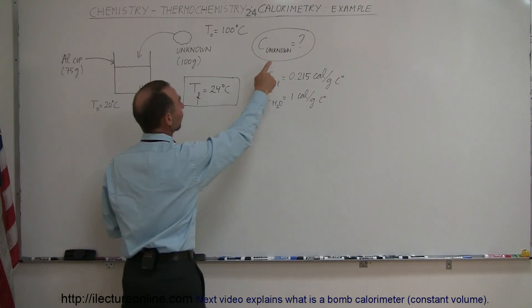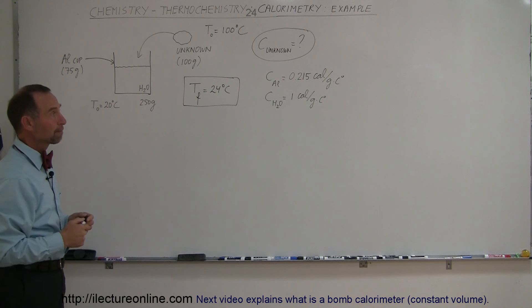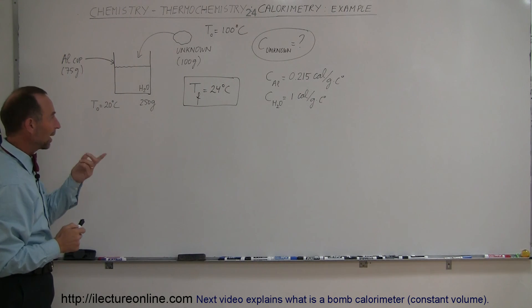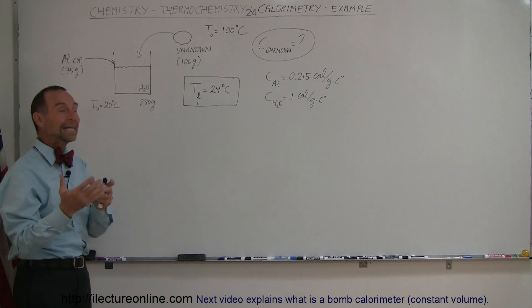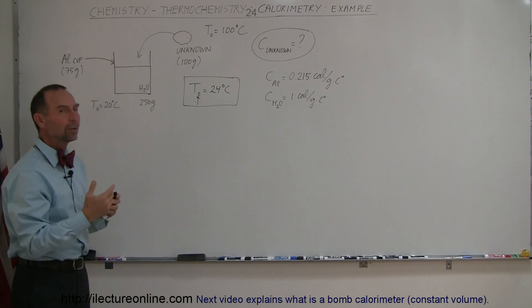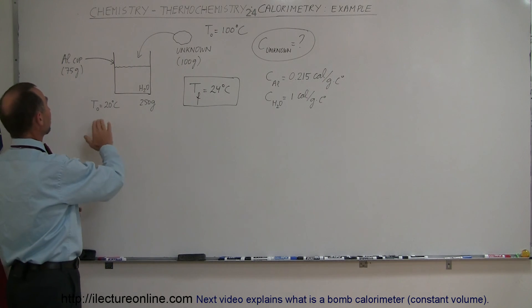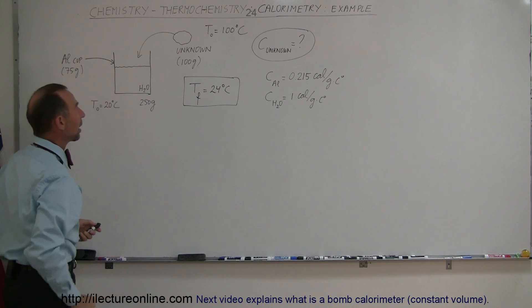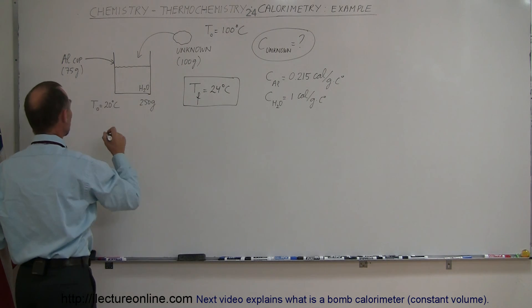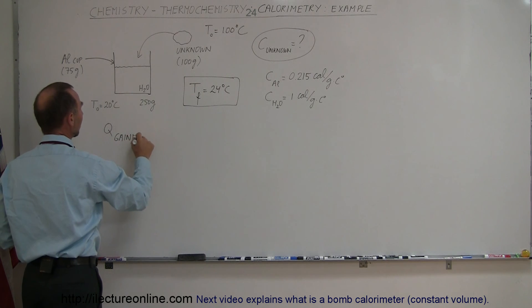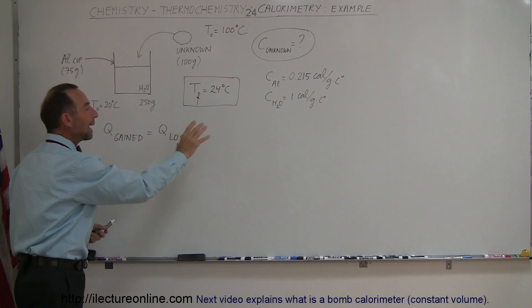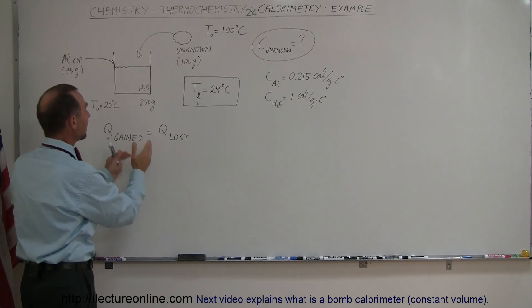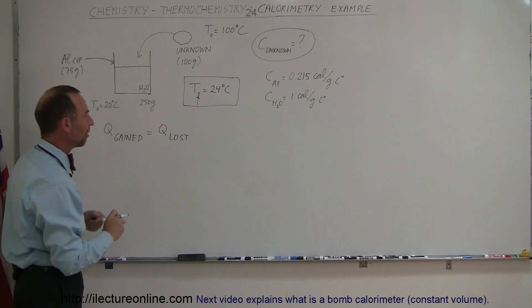The objective is to figure out the specific heat of the unknown object, and we can do that with a calorimeter. We simply say that all the heat gained by the objects that are gaining heat should equal all the heat lost by the objects that are losing heat. The objects gaining heat are the aluminum and the water; the object losing heat is the unknown. So Q gained by the cold objects equals Q lost by the hot objects, and we're going to make every quantity a positive quantity — that's very important for this equation to work.